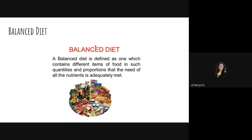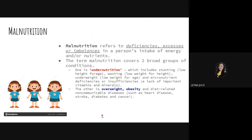A balanced diet includes adequate proportions and quantities of different kinds of nutrients such as proteins, carbohydrates, fats, vitamins, and minerals. Malnutrition refers to deficiencies, excesses, or imbalances in a person's intake of energy and/or nutrients. Some people think malnutrition only refers to being very thin or lacking food, but malnutrition actually encompasses excess nutrition as well — it covers both deficiency and excess.